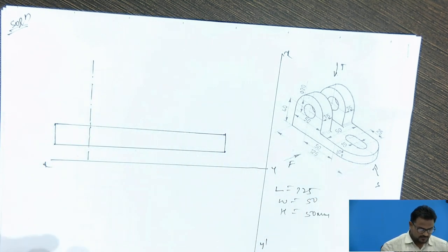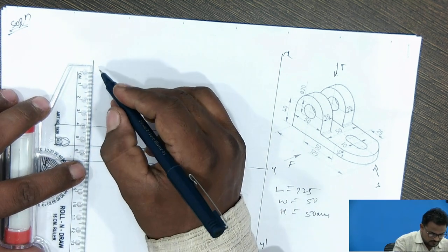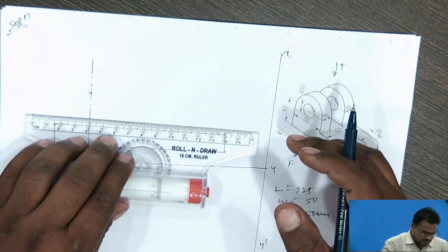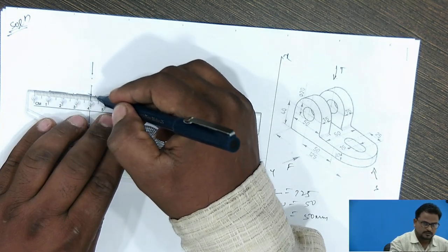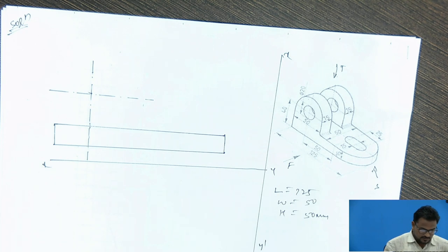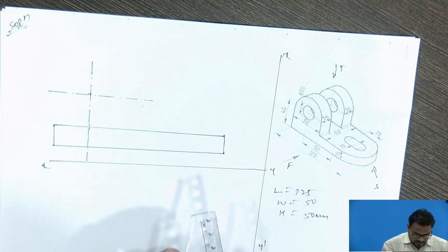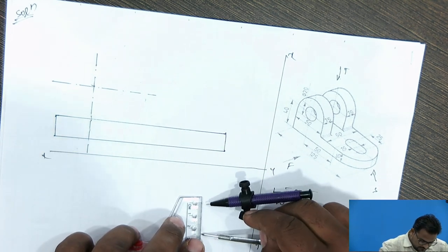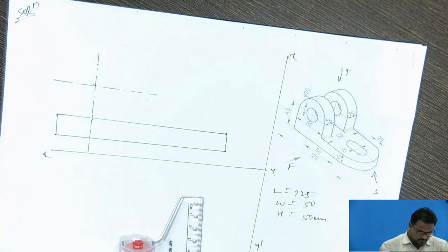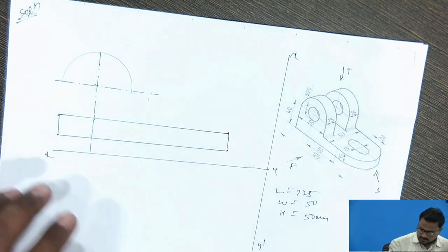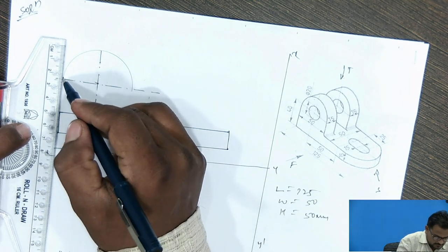This is the 15 mm block I have to draw. From this, 40 mm — so from this I have to take 40 mm and draw one axis line. The radius given is 50 mm, so I take half of that, which is 25 mm. From this I have to take 25 mm and draw this block, then project it up.